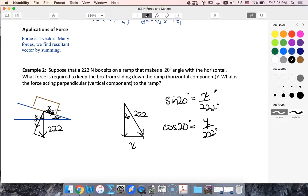So if I solve for this, I'm going to get x is approximately 76.0. And I'm going to get that my y value is approximately 208.6. Notice I could have also found this y value using Pythagorean theorem.